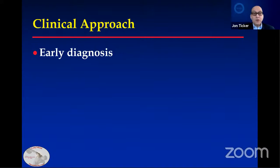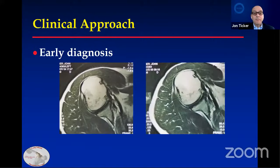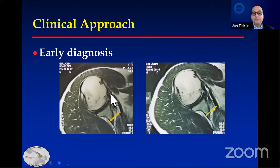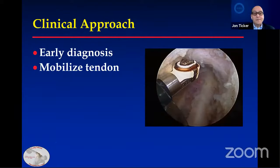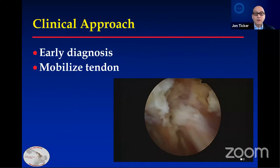The clinical approach: early diagnosis is important. This is a patient I saw after an acute subscapularis tear. I recommended surgery, and this is him nine months later — the tendon retracts and you lose the wavy appearance of the acute tear. You want to avoid a late diagnosis with an irreparable subscapularis tear. Then you want to mobilize the tendon — you can see the coracoid and then the subscapularis so that you have good lateral translation of the tendon.